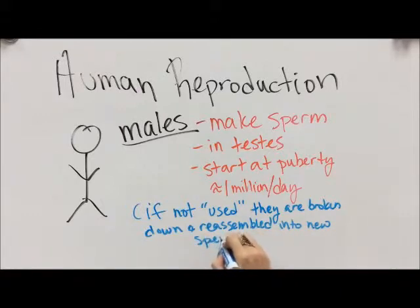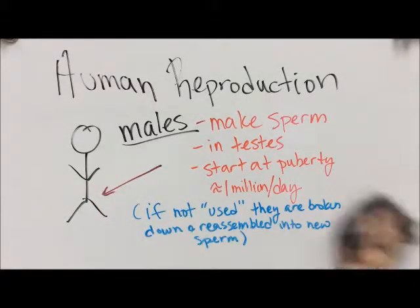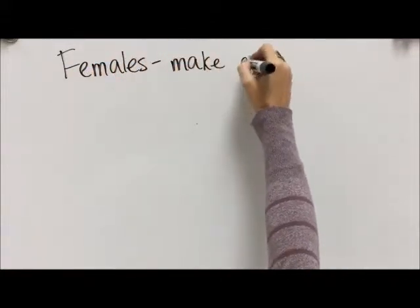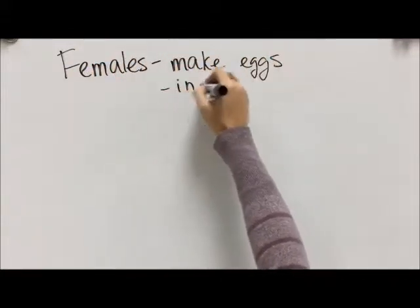Now if the sperm is not used, it's basically like broken apart and then reassembled into new sperm by the testes, because we want to protect that genetic information. If you don't know, testes kind of just hang around out in the middle of everything, so they're very vulnerable to damage and to those parts being affected by the environment. So we want to keep that sperm fresh and reassemble it, remake it every day.